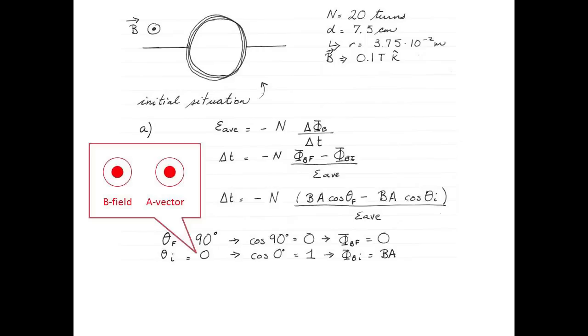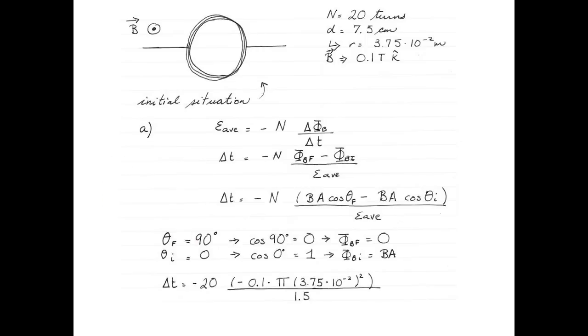The initial magnetic flux is therefore given simply by the magnetic field multiplied by the area. The time required is therefore minus 20, that's the number of turns, multiplied by zero minus 0.1, that's the magnetic field, times pi times 3.75 times 10 to the negative 2 squared, that's the area, and divided by 1.5, that's the desired average EMF. The time is 5.89 milliseconds.